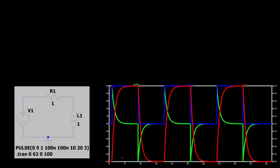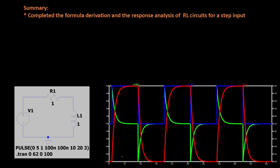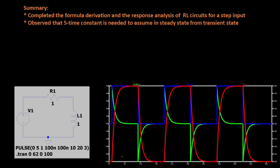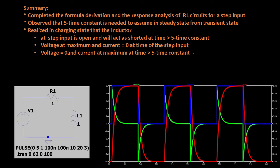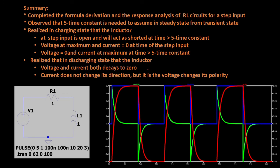That's all for the RL circuit step response. To summarize: first, we completed the formula derivation for the response analysis of RL circuits for step input. Second, at 5 time constants, it is the time needed to assume we are in steady state from transient. In the charging state, the inductor is open at the step input and acts as shorted at time greater than 5 time constants — voltage is maximum and current is 0 at step, and voltage is 0 and current is maximum at 5 time constants. In the discharging state, both voltage and current decay to 0; current does not change direction, but voltage changes polarity.